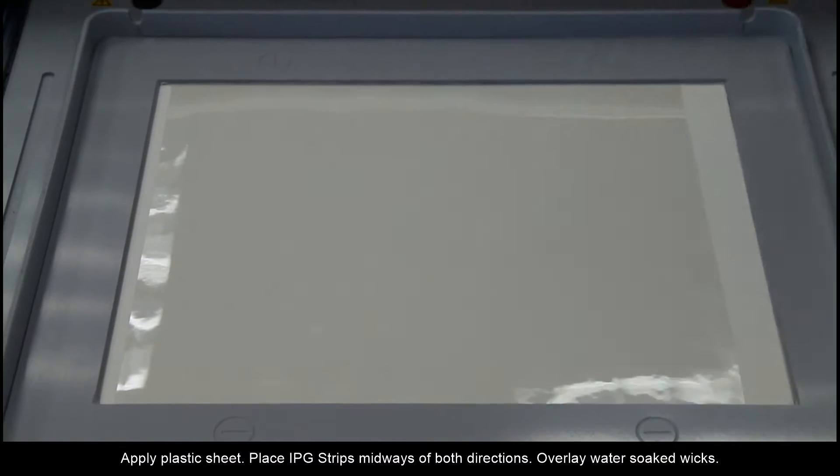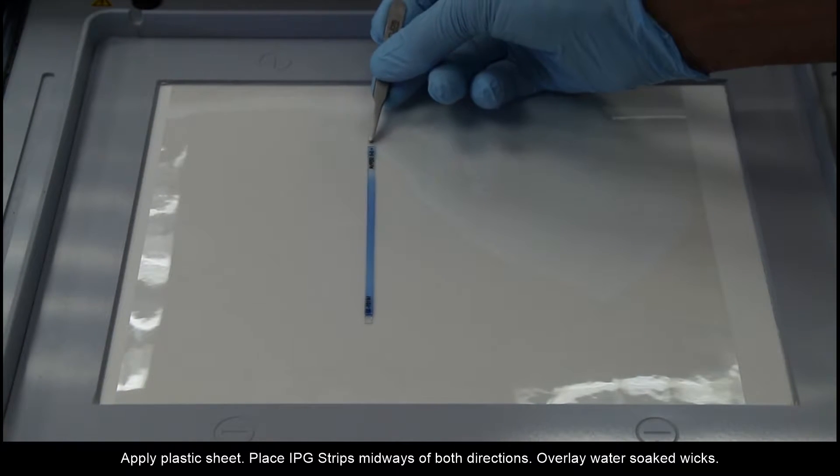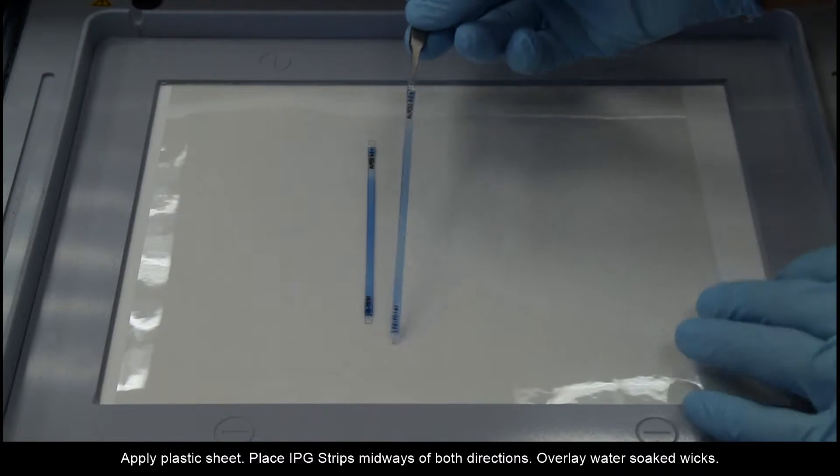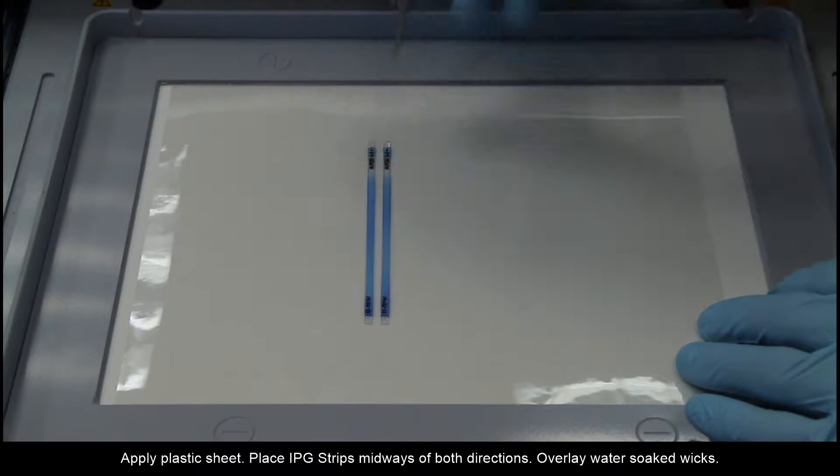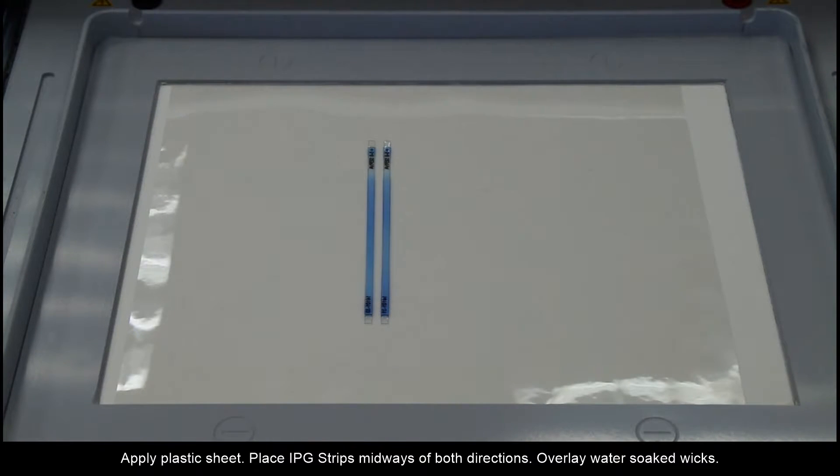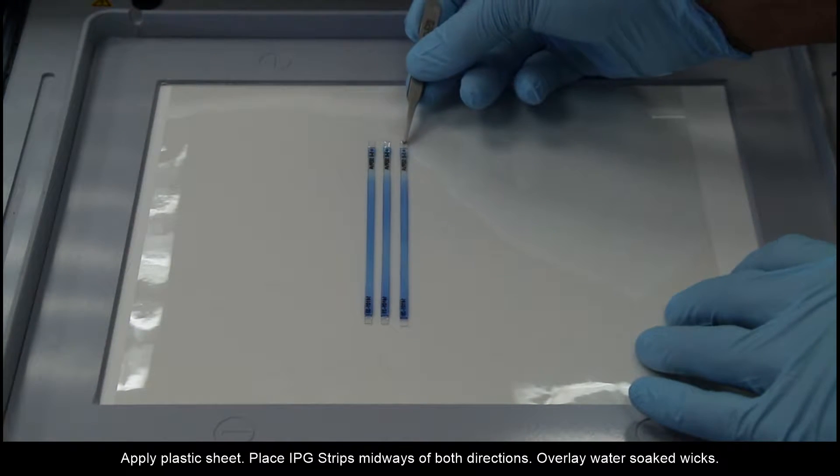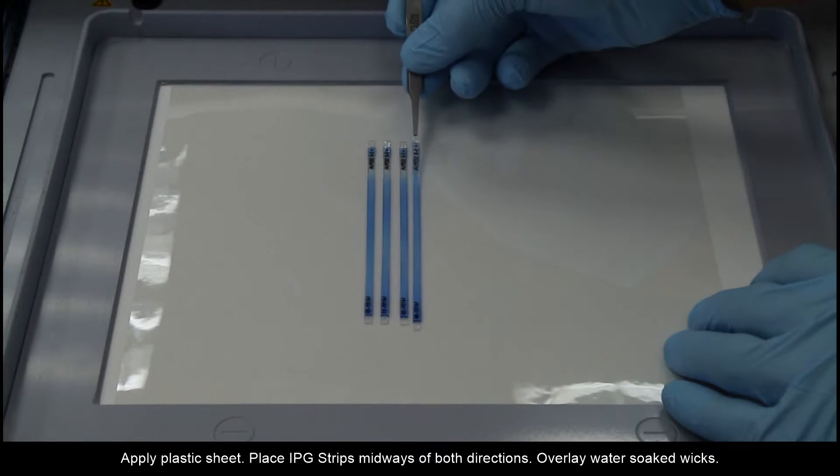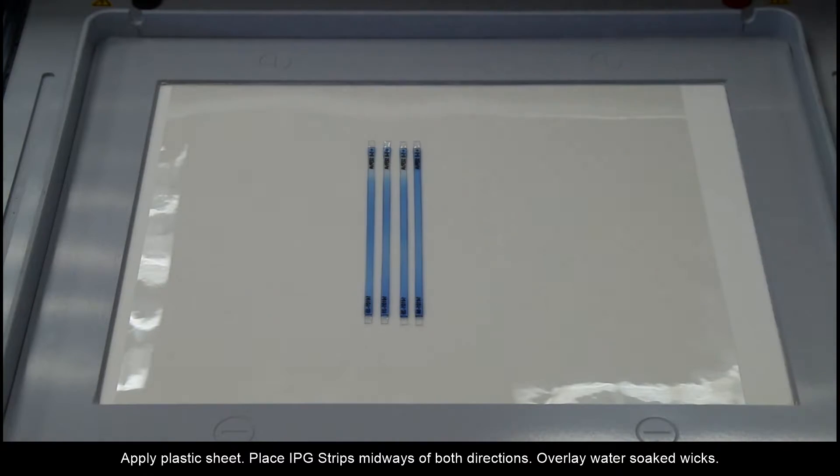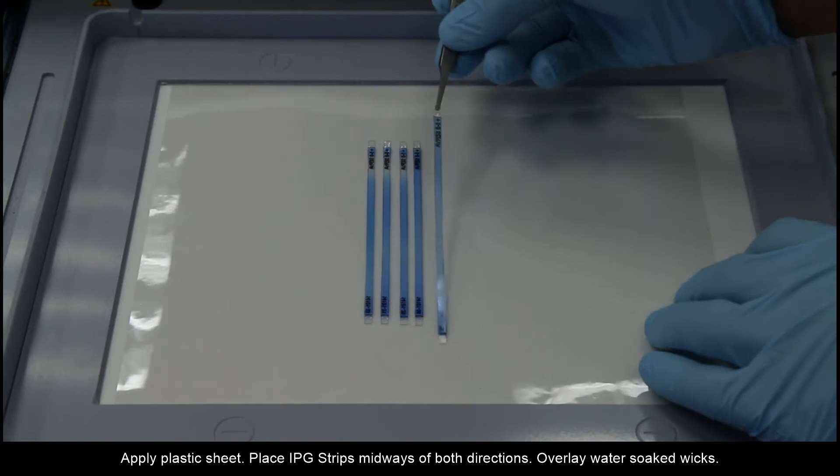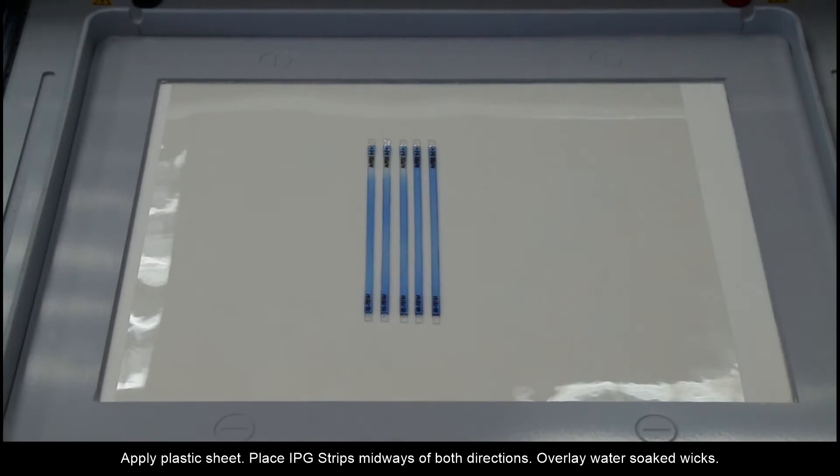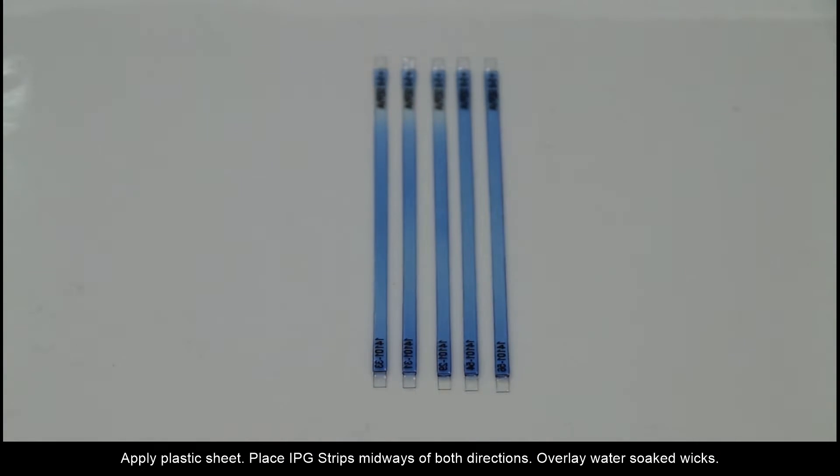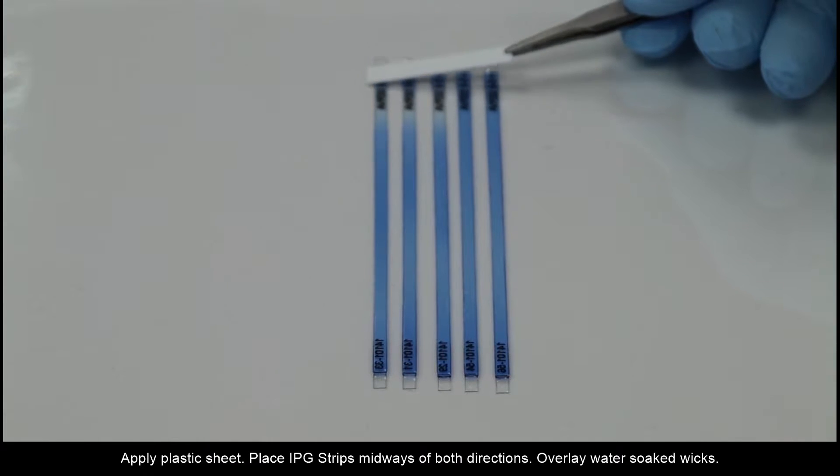First, apply a plastic sheet and place your IPG strips midways in both directions. At the end of each side of your IPG strip, place some water to overlay with the plastic sheet.